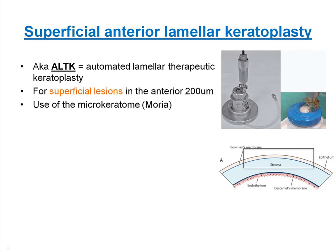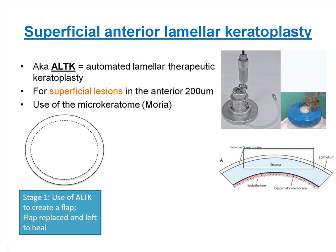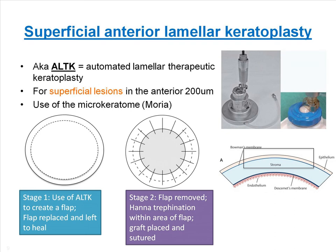ALTK is performed for disease affecting the superficial cornea in the first 200 microns or so. It involves using the microkeratome to create a flap of the desired depth in the first stage. The flap, which is of a large diameter, is replaced and left to heal. In the second stage undertaken a few months later, trephination is performed within the original flap, the flap of the predetermined depth is removed, and the donor cornea — also cut with the microkeratome — is placed on the recipient and sutured in place.